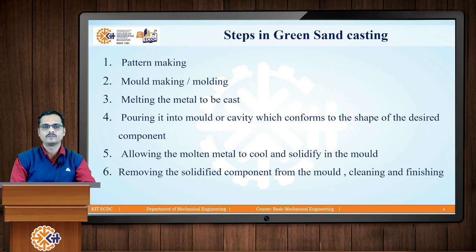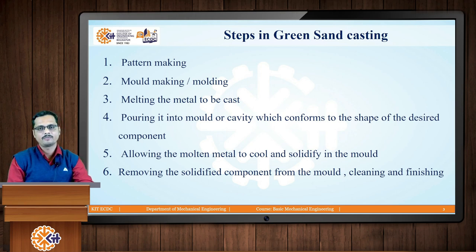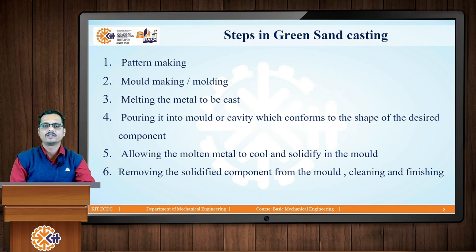So we can make use of these 6 steps to produce castings by using green sand casting: Step 1 is pattern making; Step 2 is mould making or moulding; Step 3 is melting; Step 4 is pouring the molten metal into the mould cavity; Step 5 is solidification — allowing the mould to cool and solidify; and Step 6 is removing the solidified piece of metal by breaking the mould, then cleaning and finishing that casting.